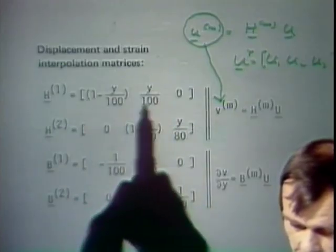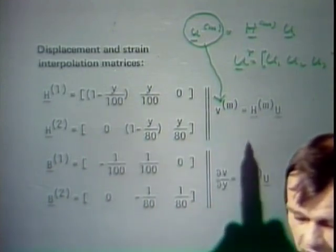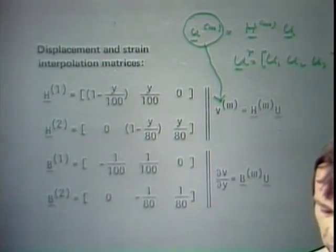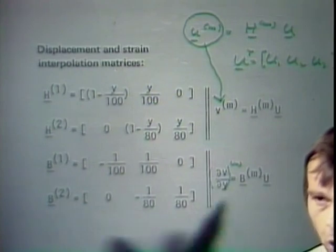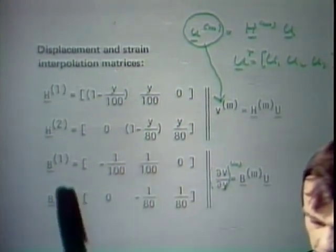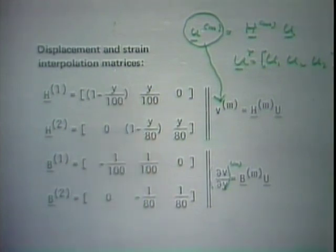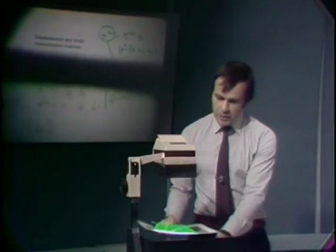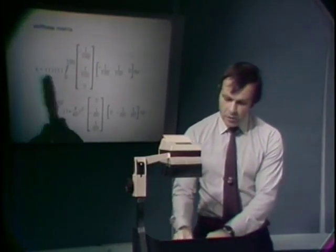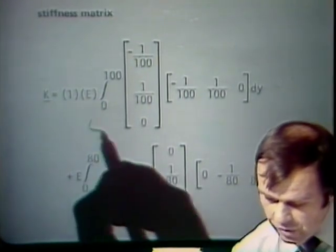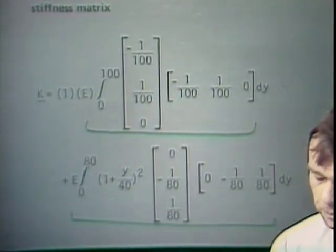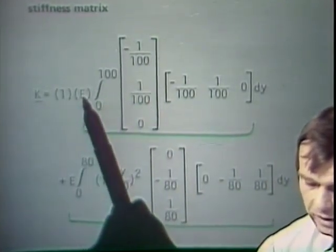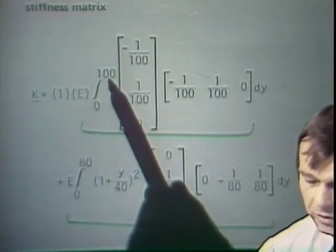The element displacement interpolations involve functions (1 - y/L) for a unit displacement at the left end and (y/L) for a unit displacement at the right end, giving a linear variation. Notice that there is no coupling from the third degree of freedom into element 1, and no coupling from the first degree of freedom into element 2 — a large number of zero columns and rows in the element stiffness matrices, recognized in the direct stiffness procedure.